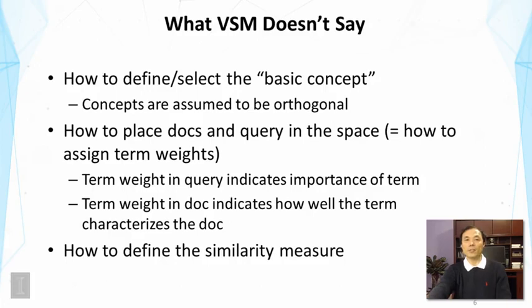Secondly, it did not say how we exactly should place documents and the query in this space. Basically, I showed you some examples of query and document vectors, but where exactly should the vector for a particular document point to? So this is equivalent to how to define the term weights. How do you compute those element values in those vectors?